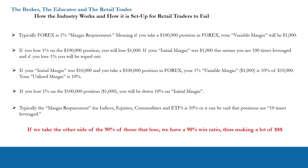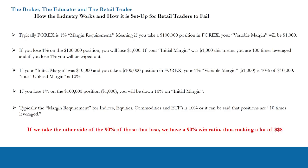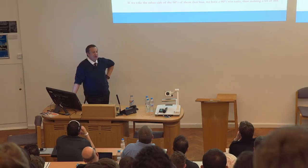But what if you put 10 grand in your account? In that scenario, if you lost 1% on a $100,000 position, you'd lose 10% of your margin. The average balance of a retail trading account in the UK and Europe is a couple of thousand dollars — and what are they doing? Taking $200,000 positions in Forex and blowing up in days. That's 100 times leverage. With stocks, commodities, and ETFs, you're looking at 10 times leverage — if you lose 10%, you're out.